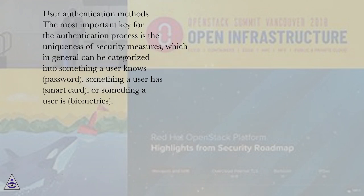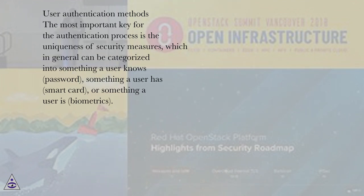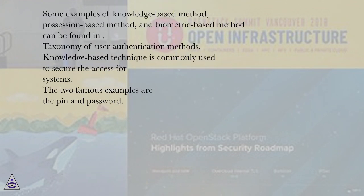User authentication methods. The most important key for the authentication process is the uniqueness of security measures, which in general can be categorized into something a user knows, such as a password; something a user has, such as a smart card; or something a user is, such as biometrics. Examples of knowledge-based, possession-based, and biometric-based methods can be found in the taxonomy of user authentication methods.